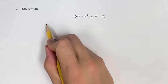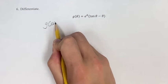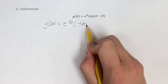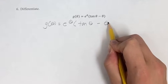In this problem we're differentiating the function g of theta is equal to e to the theta times tangent theta minus theta.